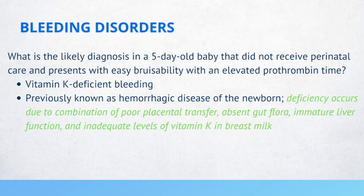What is the likely diagnosis in a five-day-old baby that did not receive perinatal care and presents with easy bruising and an elevated prothrombin time? Vitamin K deficient bleeding — previously known as hemorrhagic disease of the newborn. This deficiency occurs due to a combination of poor placental transfer, absent gut flora, immature liver function, and inadequate levels of vitamin K in breast milk.